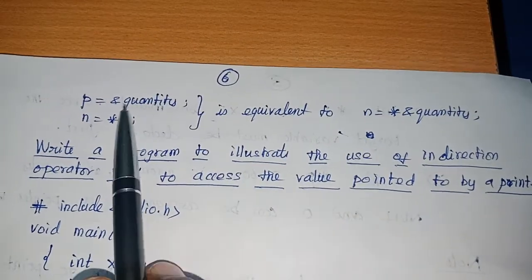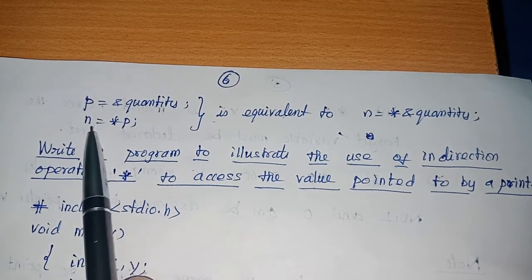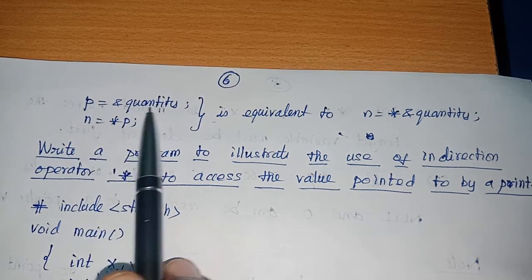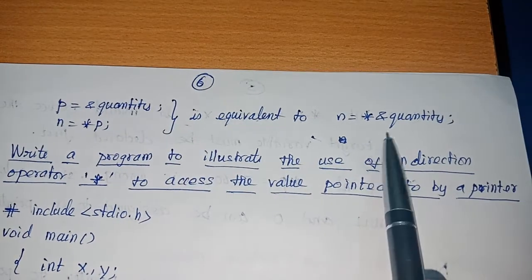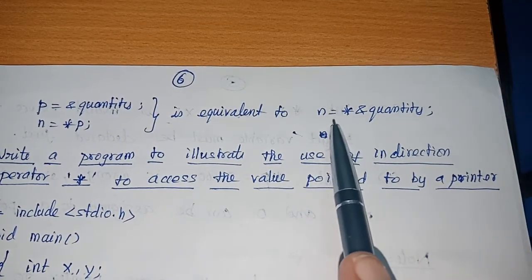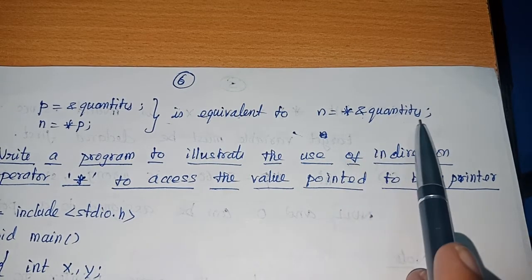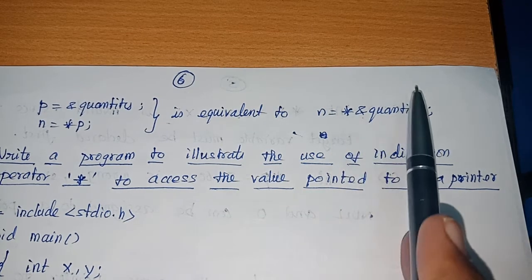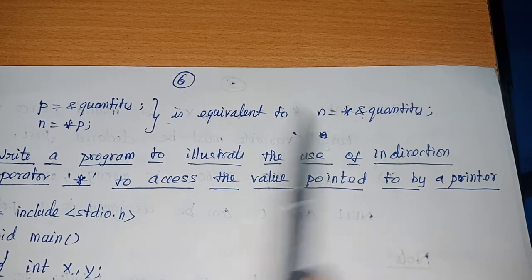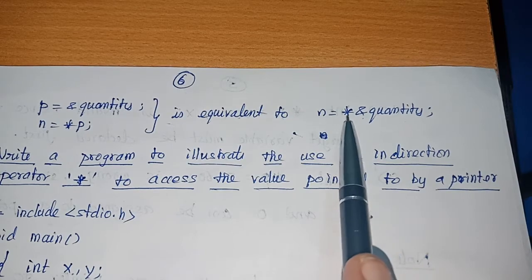This statement can also be written as: p = &quantity, which collects the address of quantity in p, and then n = *p, which collects the value of quantity and stores it in n. These two statements can be combined into a single statement: n = *(&quantity). The address operator collects the address of quantity, and the dereferencing operator goes to that address and collects the value and stores it in n. So these two operations can be done in a single statement using & as well as *.